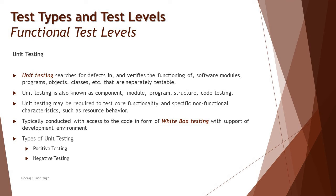There are two types of unit testing: positive testing and negative testing. Positive testing means testing with a valid set of data. Negative testing means testing with an invalid set of data. For example, a text field that should only accept characters — entering characters is the valid input and is positive testing. Entering digits, numbers, alphanumeric values, spaces, or special characters is invalid input and is negative testing.